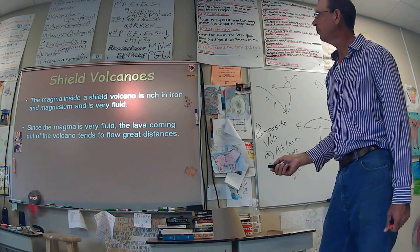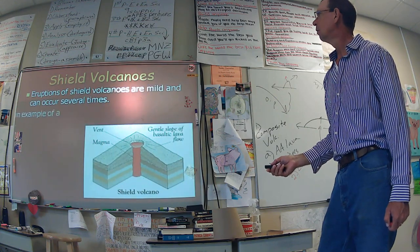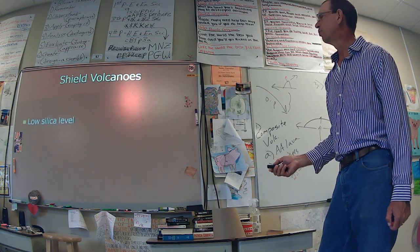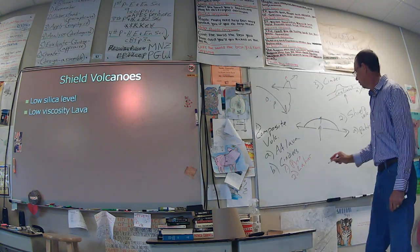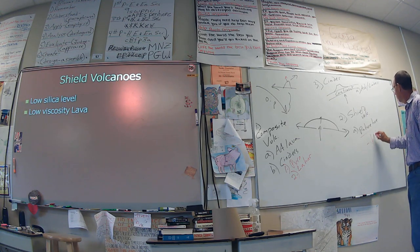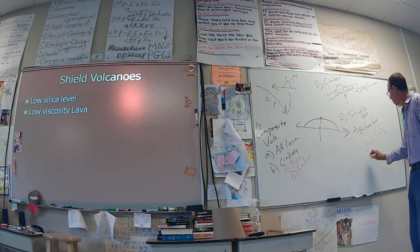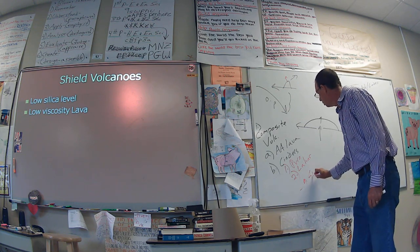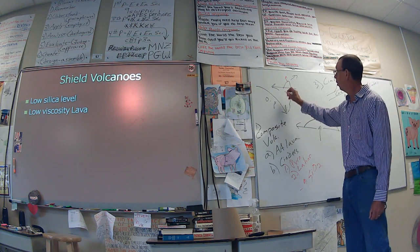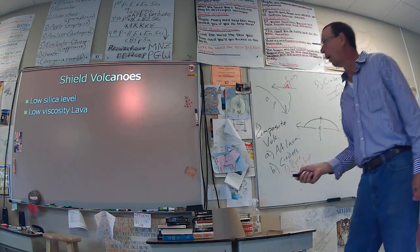Shield volcanoes — this is Hawaii basically. Very fluid. You don't get a lot of explosions, you just get a lot of lava. The silica level, SiO2, is low on these, which means it's not very viscous — it has low viscosity, so it flows real easy. Composite volcanoes have a high SiO2. There's a lot of glass in there, so it's very viscous and gets clogged. You get a lot of pressure that builds up, and when it blows, it blows big — you've got nothing but problems.